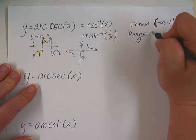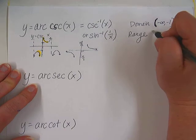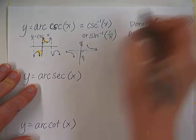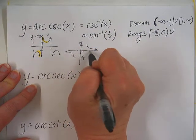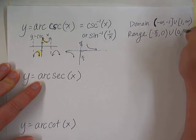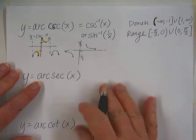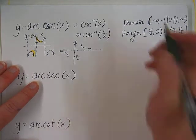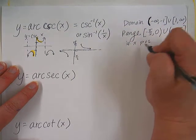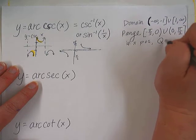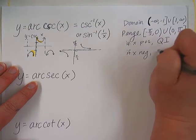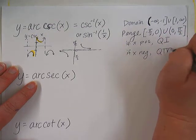So the range will be from negative pi halves. And we actually need to stop at 0. Why do we need to stop at 0? Because there's an asymptote right there. So it doesn't exist at 0. And then this one will be 0 to pi halves. This means that our answers, if x is positive, will be in quadrant 1, like usual. But if x is negative, then our answers will be a negative angle in quadrant 4.